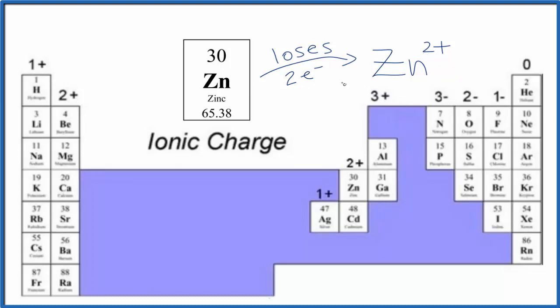You might wonder, where does it lose these two electrons? In general, it loses them to another element when it forms a bond. So you have zinc, Zn, here, and it loses two electrons. It's 2+, and it'll lose it to something like chlorine, Cl.